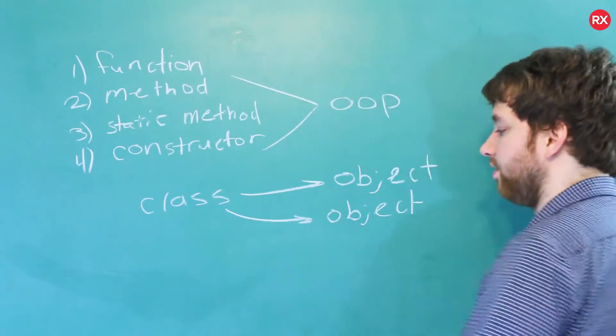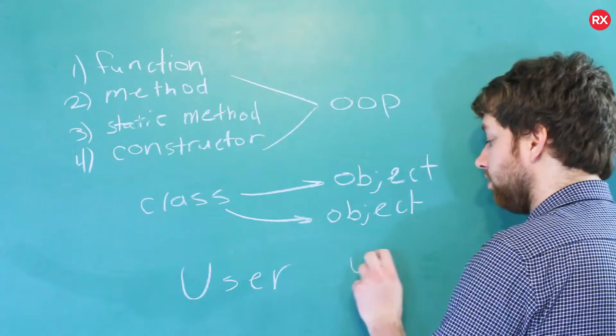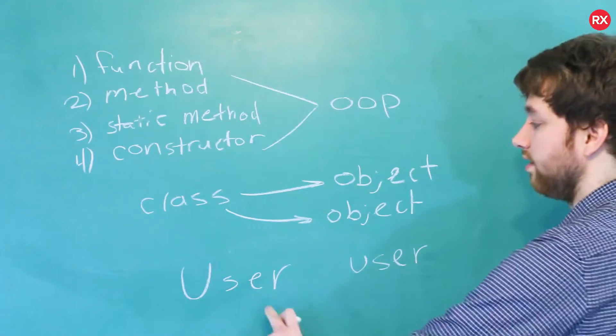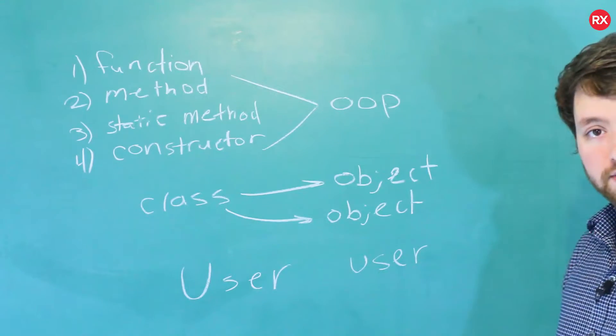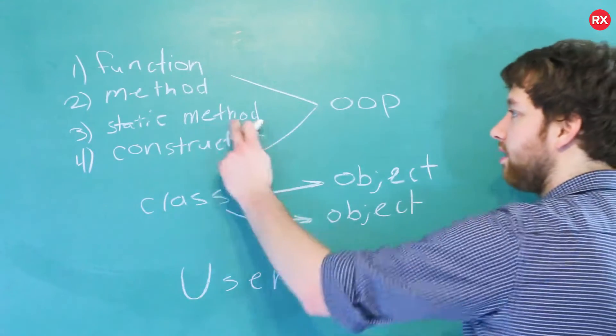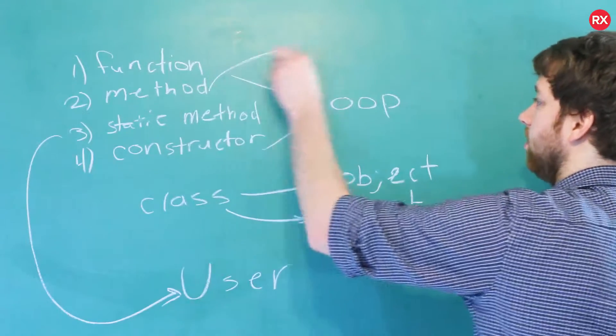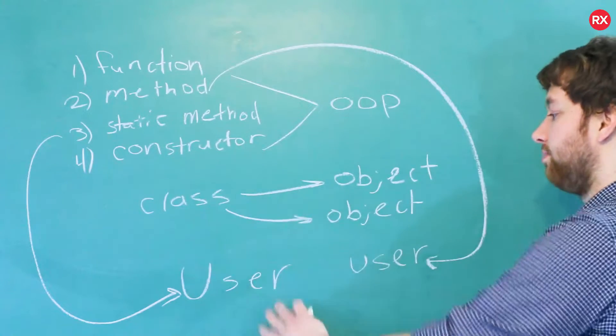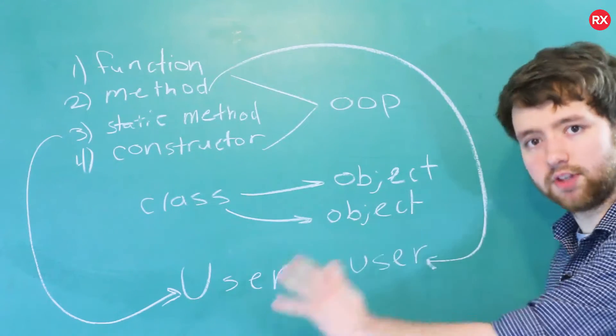So in this situation, if we had a custom type such as user, and we created a specific user, notice the difference here. This is uppercase, this is lowercase. This is the class that it was defined in. This is the object, the instance of it. A static method would be attached to this, and a method would be attached to this. Static methods are not dependent on a specific entity or an instance of the class. It's just tied to the class itself.